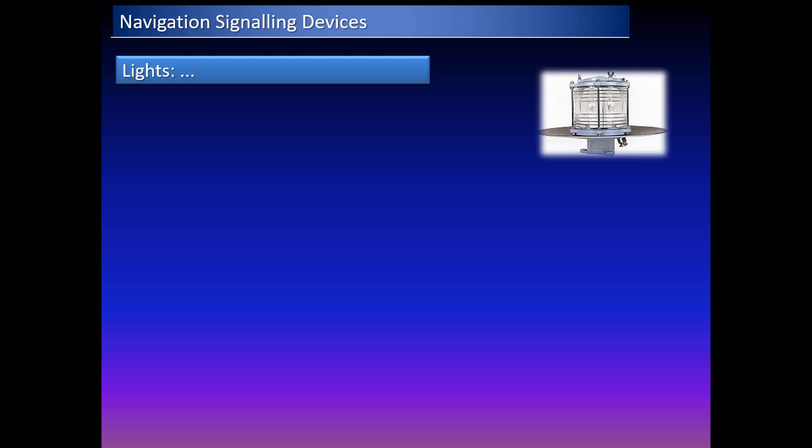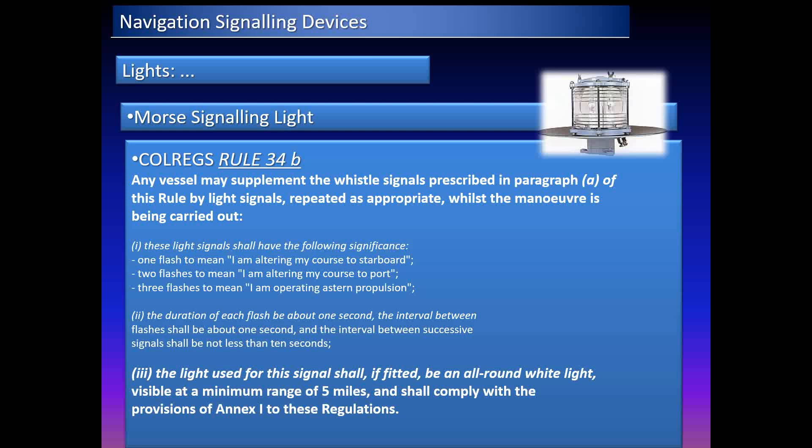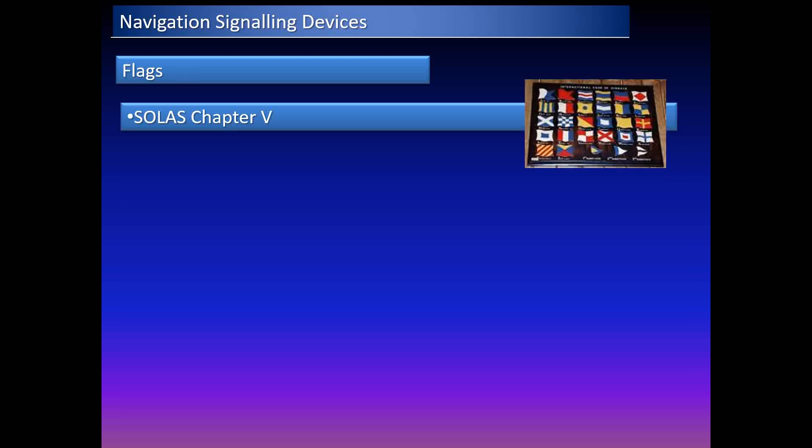Most types are powered by 12 or 24 volts DC, and spares are available for repairs. The Morse signaling light is also mentioned in COLREGS Rule 34. One flash means 'I am altering course to starboard' and two flashes means 'I am altering course to port.' Vessels are required to have a system of visual signals that may work in conjunction with or independently from sound signals — typically an all-round white light fitted to the mast that also flashes when the ship's whistle is used.